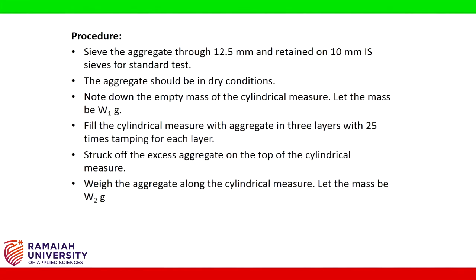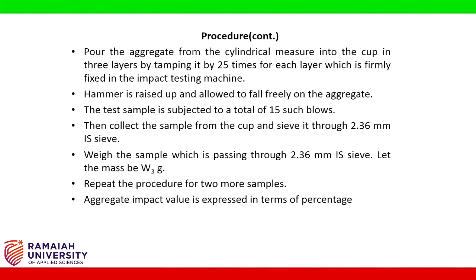Strike off the excess aggregate on the top of the cylindrical measure and weigh the aggregate along with the cylindrical measure — let the mass be W2 grams. Pour the aggregate from the cylindrical measure into the cup in 3 layers, tamping 5 times for each layer, which is firmly fixed in the impact testing machine. The hammer is raised up and allowed to fall freely on the aggregate.